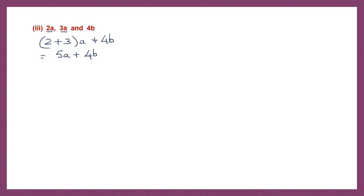I cannot add 5A and 4B together because they are unlike terms. Question 4: 3x and 2y. As you can see, they're unlike terms. I cannot add them. So my answer will simply be 3x plus 2y.